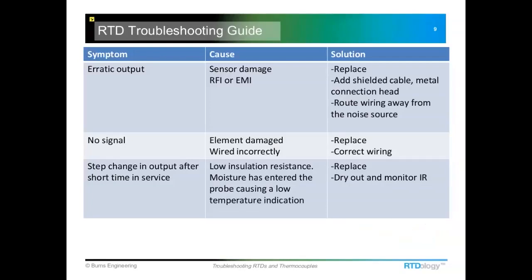One of the most common issues people run across is an erratic output — the temperature jumps up and down. Sometimes it might even read okay, and then the temperature will go up. That's typically an indication that the sensing element has been damaged. If you imagine that little coil of platinum wire vibrating past what it can survive, the wire starts to fracture just a little bit, changing the resistance and causing the indicated temperature to jump around. As that fracture vibrates, the resistance can change quite a bit and eventually could go open circuit.